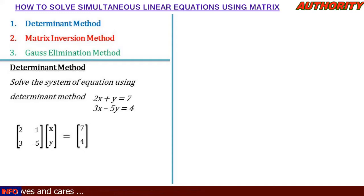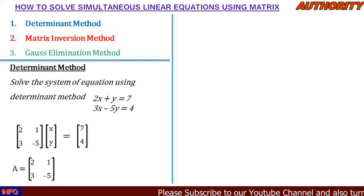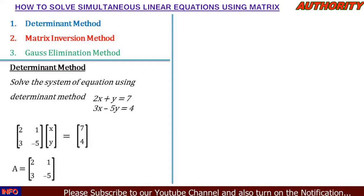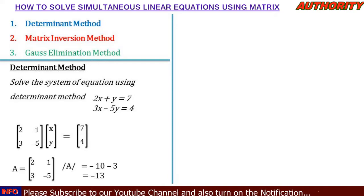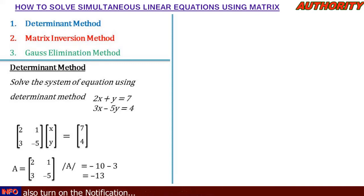We call the coefficient matrix, [2, 1; 3, -5], matrix A. Now we find the determinant of this 2x2 matrix. The determinant equals 2 times -5 minus 3 times 1, which gives -10 - 3 = -13. So the determinant of matrix A is -13.